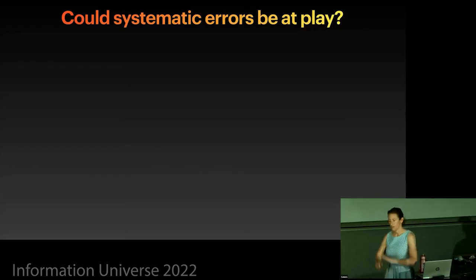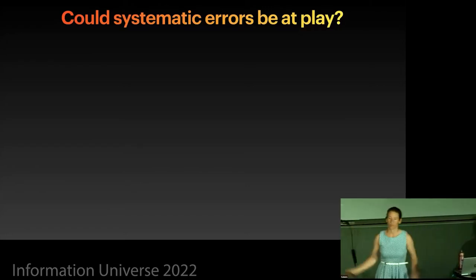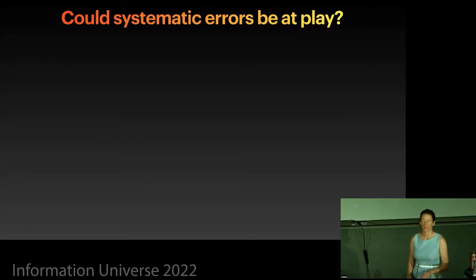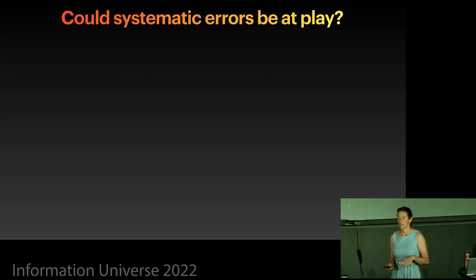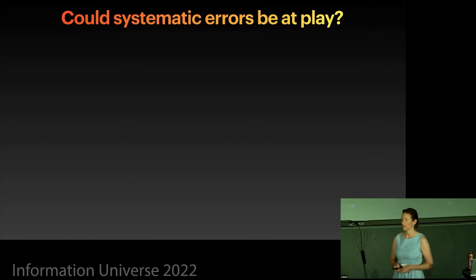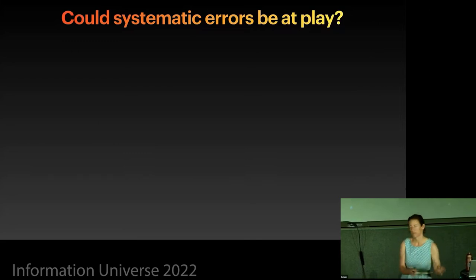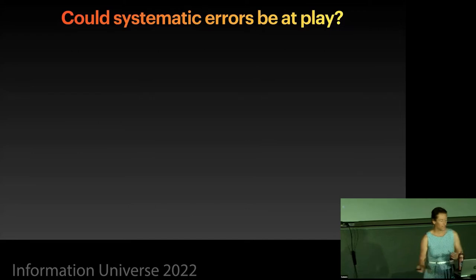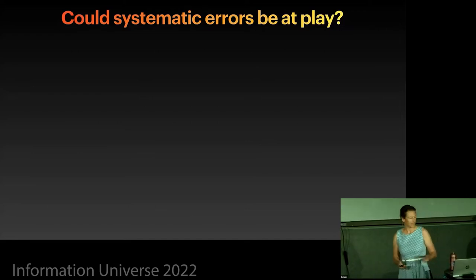So we see some tensions, we've got all of these beautiful different array of measurements. And one of the problems is with the theoretical models, which I know Nikki is going to talk about in the next thing. It's challenging to tweak a model in one way that fixes one observation without breaking the others. And so it's natural to ask, could systematic errors be at play in our observations?